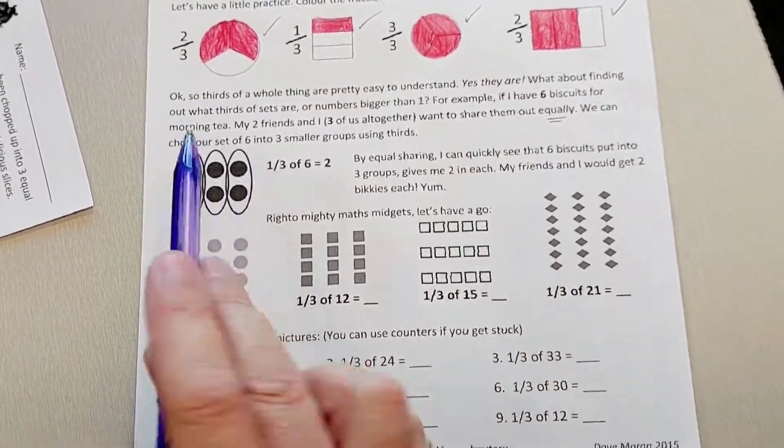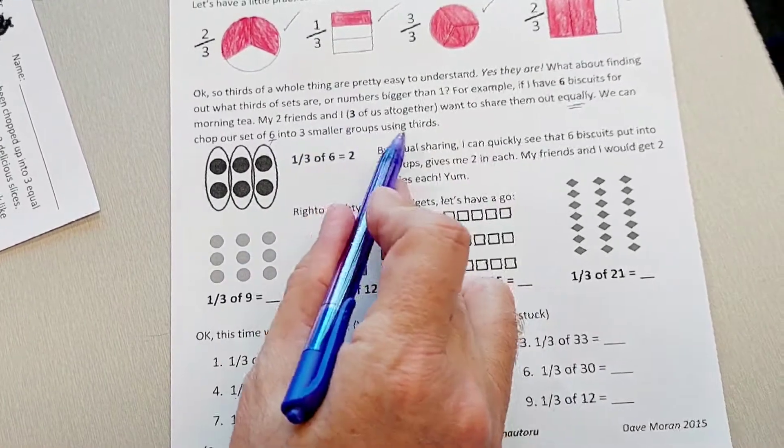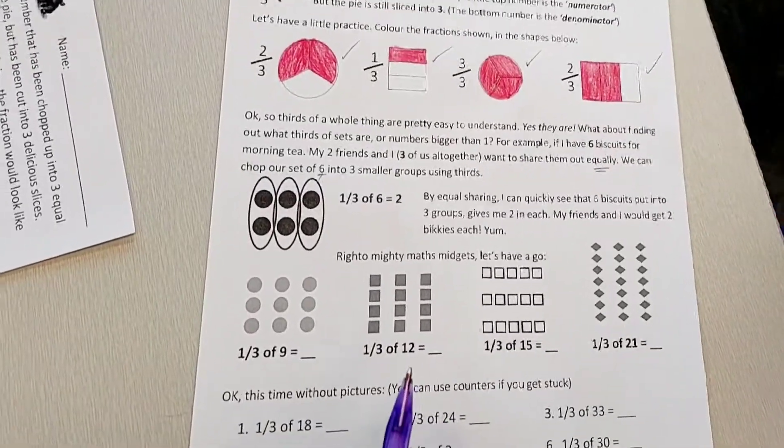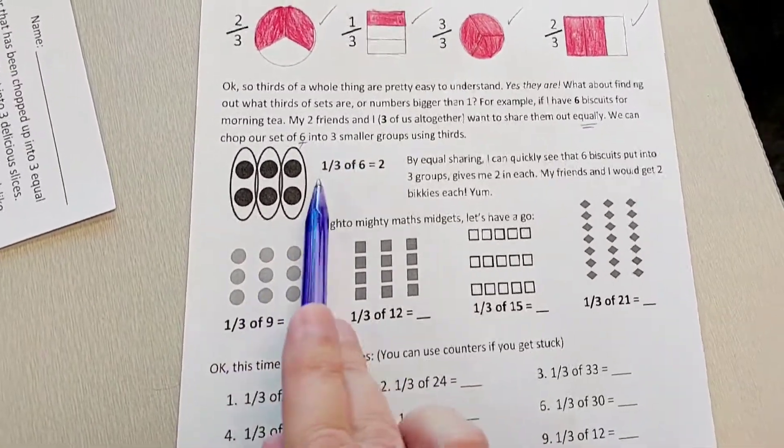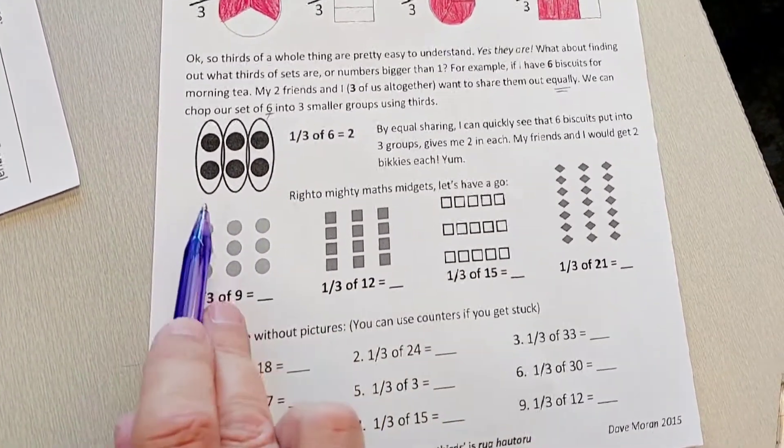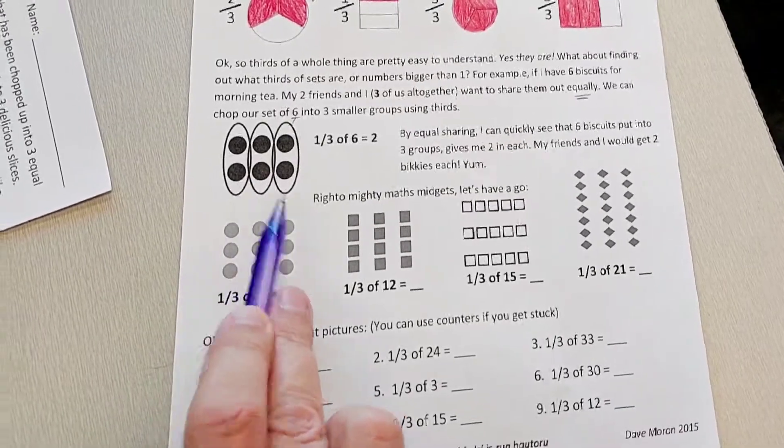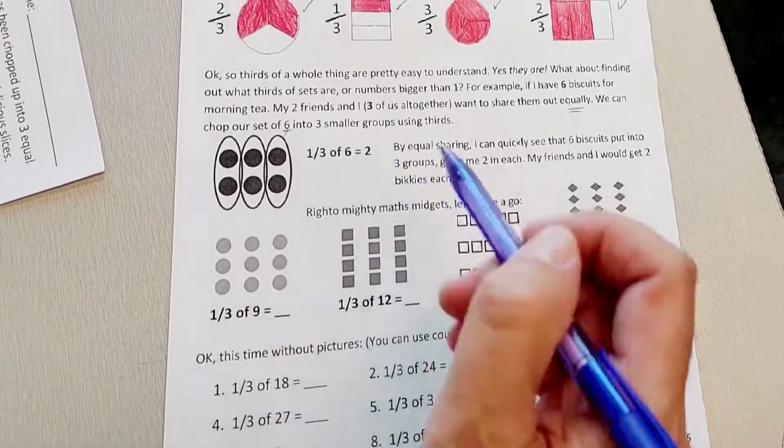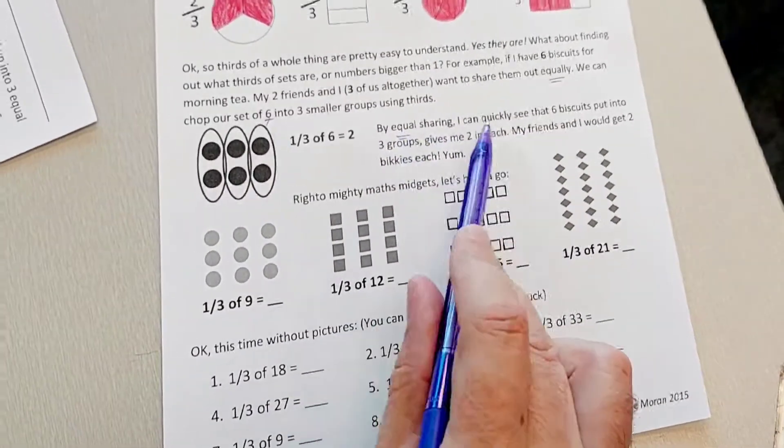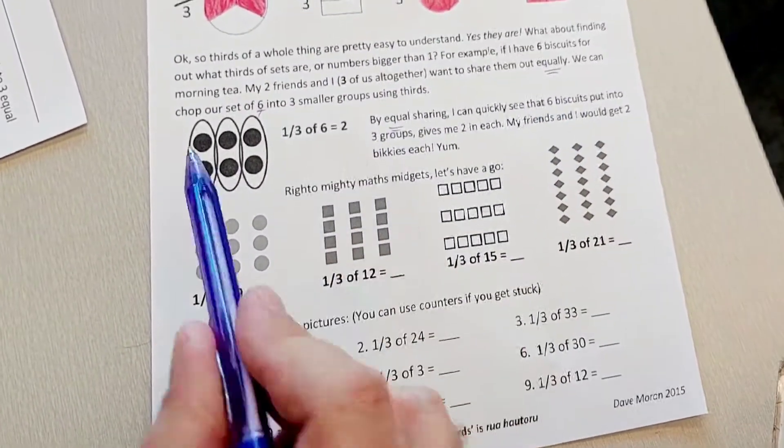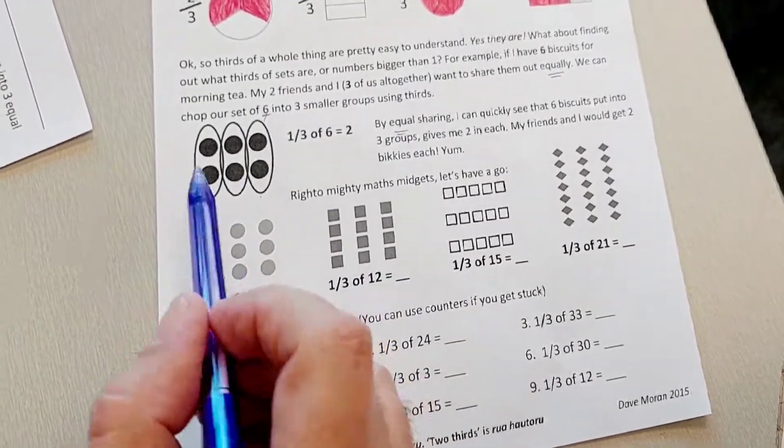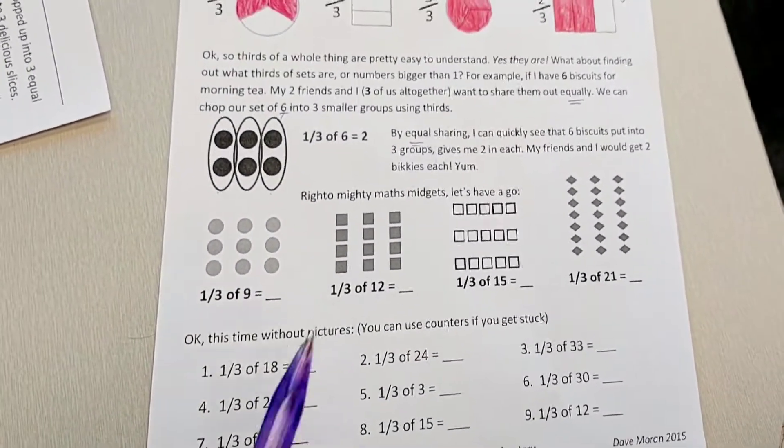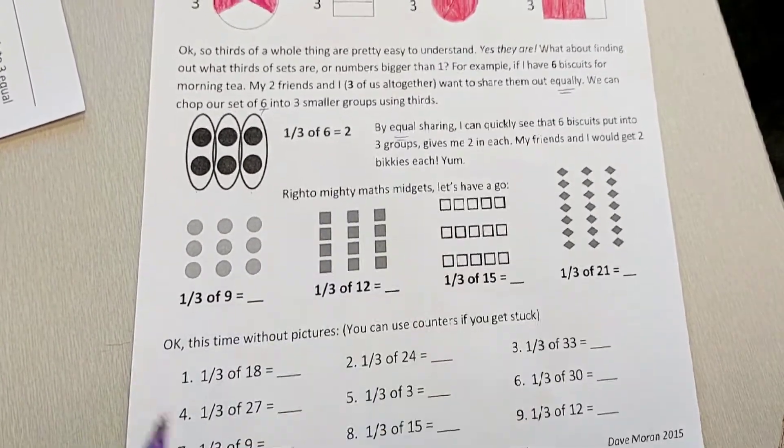We can chop our set of six into three smaller groups using thirds. So one third of six is two. You can see that this group has been split into three groups. So by equal sharing, I can quickly see that six biscuits put into three groups gives me two in each. My friends and I would get two biscuits each.